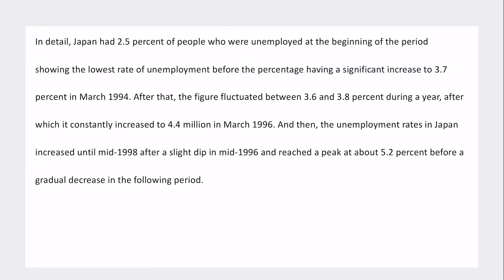For body paragraph one, the candidate wrote: 'Japan had 2.5% of people who were unemployed at the beginning of the period, showing the lowest rate of unemployment, with a significant increase of 3.7% in March 1994. After that, the figure fluctuated between 3.6% and 3.8% during a year, after which it constantly increased to 4.4 million.' The second half of that first sentence is confusingly phrased — it should compare Japan to the USA. Also 'constantly' should be 'consistently': if something is constant it's not changing, whereas consistently means it keeps happening repeatedly.